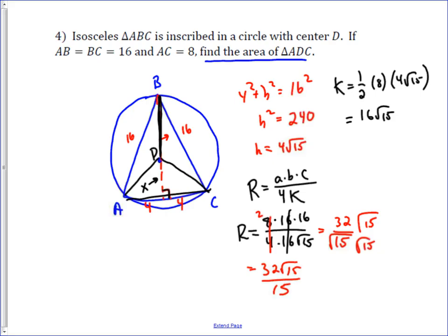Well, H, the whole length, is 4 root 15, so the X is just going to be 4 root 15 minus 32 root 15 over 15. Well, 4 root 15 could be written as 60 root 15 over 15, so when you subtract those, you get 28 root 15 over 15.